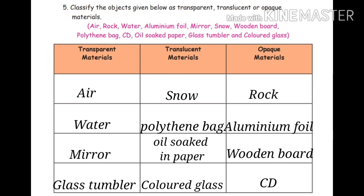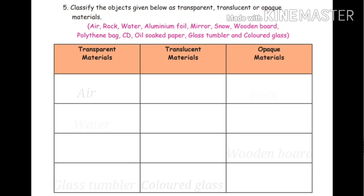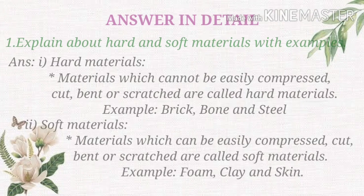Translucent materials: snow, oil-soaked paper, coloured glass and polythene bag. Opaque material: rock, aluminium foil, wooden board, CD.